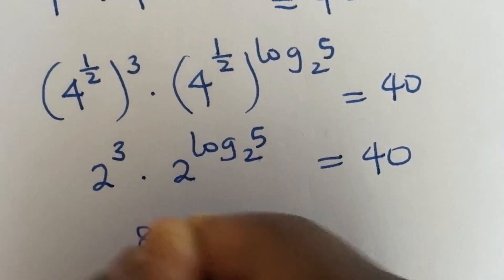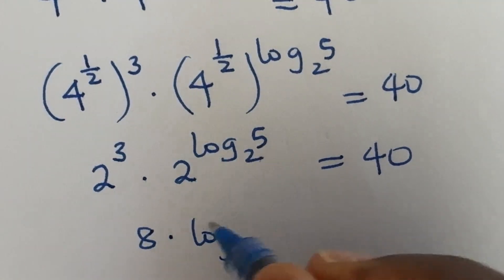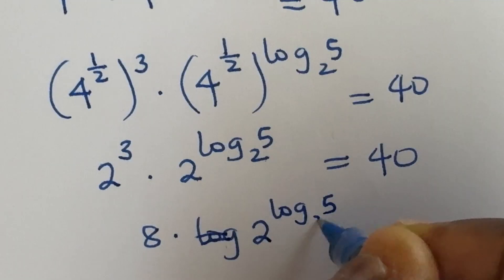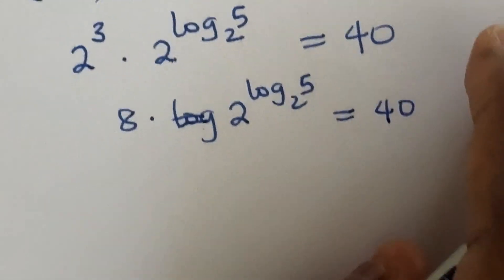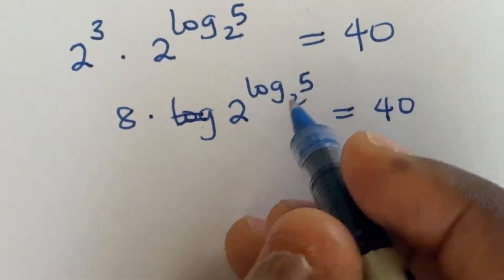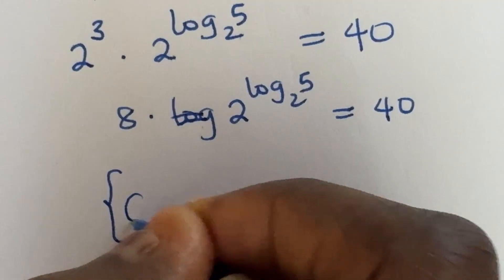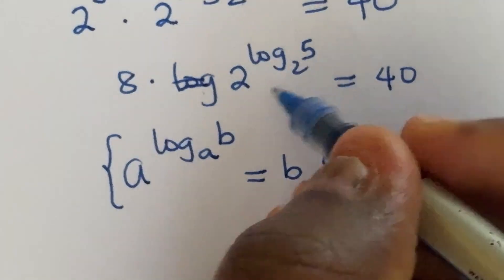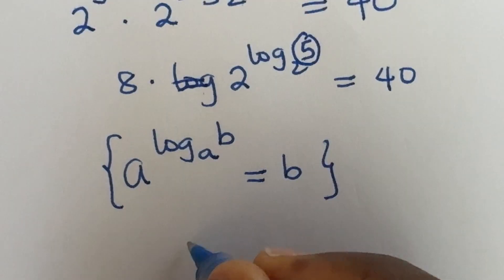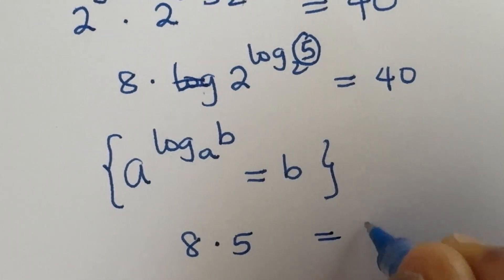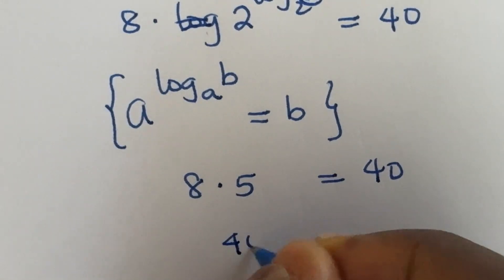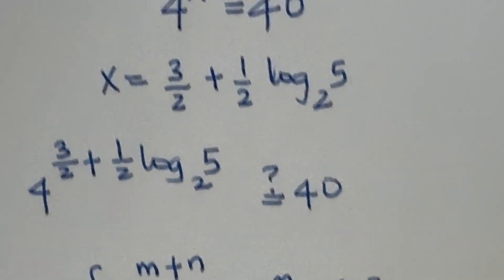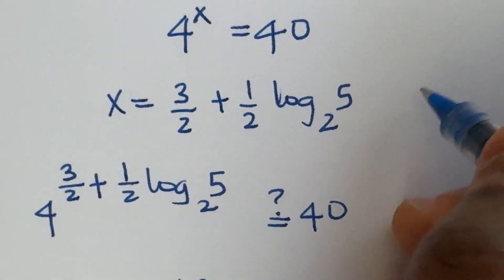4 raised to power 1 over 2 is 2 — that's the square root of 4 — then raised to power 3. This is 2 raised to power log 5 base 2, equal to 40. 2 raised to power 3 is 8, times 2 raised to power log 5 base 2, equals 40. Now, 2 raised to power log 5 base 2 is of the form a raised to power log b base a, which will always give you b. It means 2 raised to power log 5 base 2 is 5. Therefore 8 times 5 is equal to 40, and 40 on the left is equal to 40 on the right. That tells us our solution for x — which is 3 over 2 plus 1 over 2 log 5 base 2 — is correct.